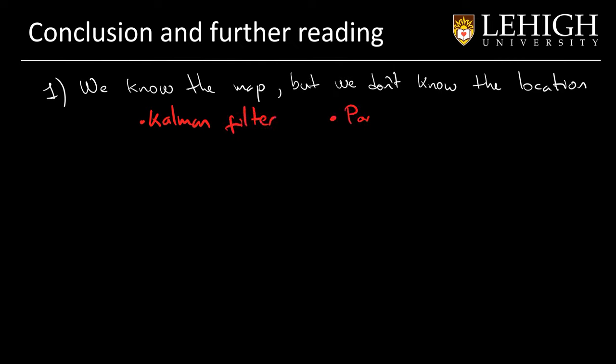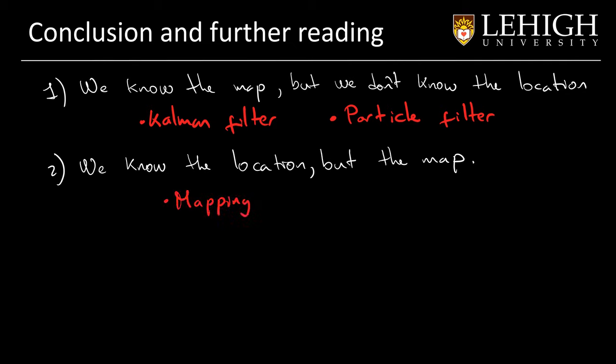So this is what we have for today. Just to finish, we have some conclusions and remarks. And the first part is that we have been studying the case when we know the map and we don't know the location of the robot. That's from the previous videos where we learn how to use the Kalman filter and also the particle filter. The second case is when we know the location of the robot, but we don't know the map. And for that, we have been using mapping and occupancy grid. That is the technique that we studied today.